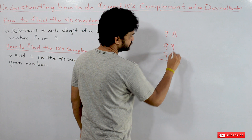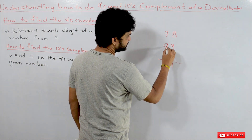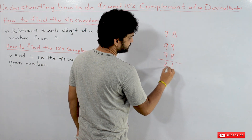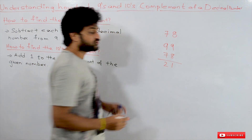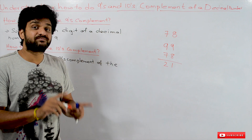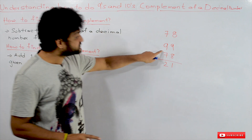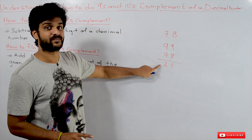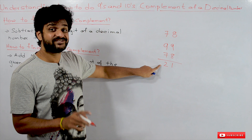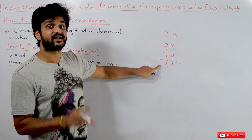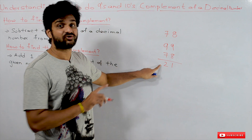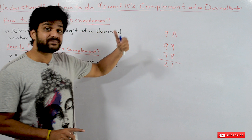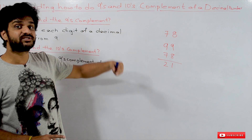So 9 minus 8 is 1, and 9 minus 7 is 2. So the 9th complement of 78 is 21. This is just to find the 9th complement of a number.